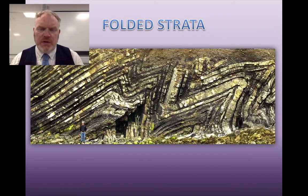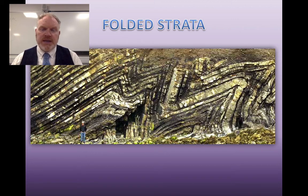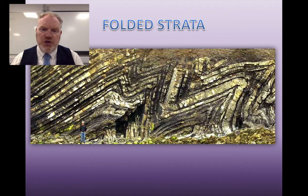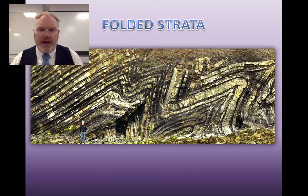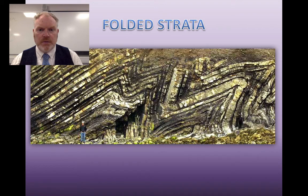We've seen how folds form where we get compression of ductile rocks. Now I'd like you to have a go at question 7 at the bottom of page 12. To do this, you need to mark with a highlighter pen where the axis of each fold that you can identify in this cliff is actually located. Remember, the axis is a line that joins together hinge points in different beds.